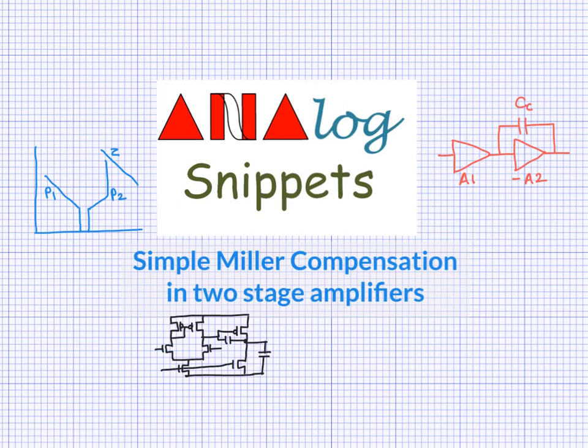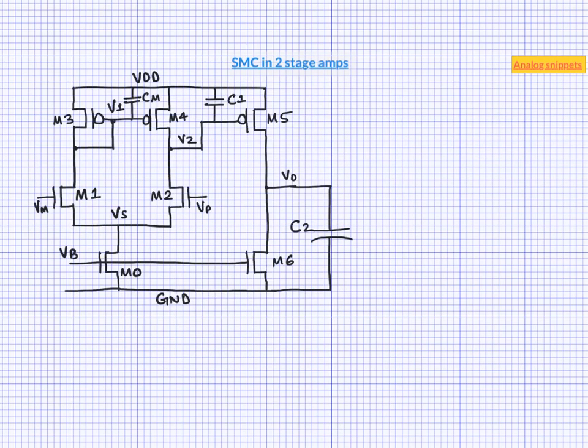In this video, we will consider a two-stage CMOS amplifier and see how Miller compensation affects the design choices. Here we have the most commonly used two-stage CMOS amplifier topology. A single-ended differential amplifier makes the first stage and a PMOS common source amplifier is the second stage. Both stages are biased by current sources which are actually part of a common current mirror which is not shown here.